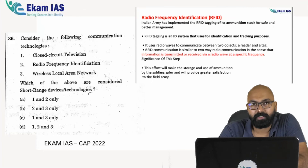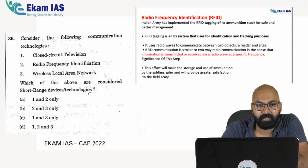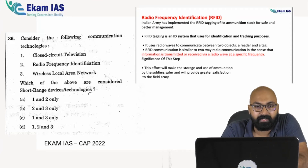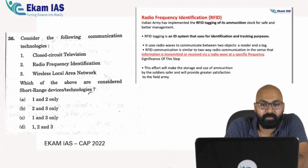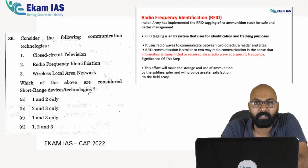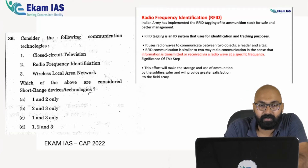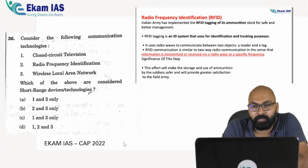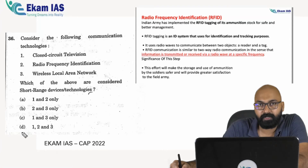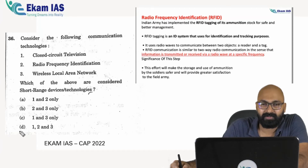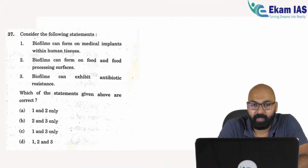The next question is about communication technologies — CCTV, RFID technology, and wireless local area networks — asking whether they are short-range or long-range devices. These are listed in our CAP 2022 materials. With fair information and common sense, you can identify these as closed, short-range networks. The answer is 1, 2, and 3 — a confusing but ultimately easy question.